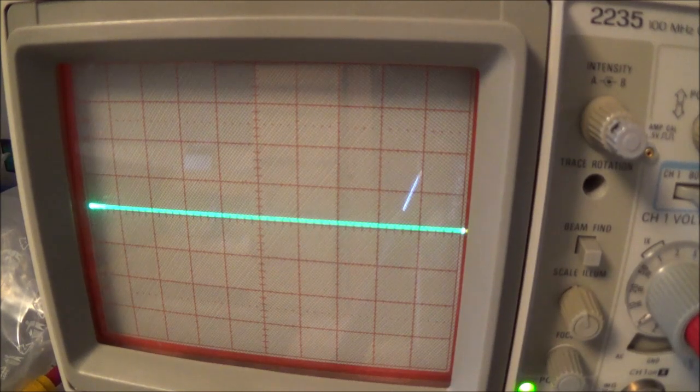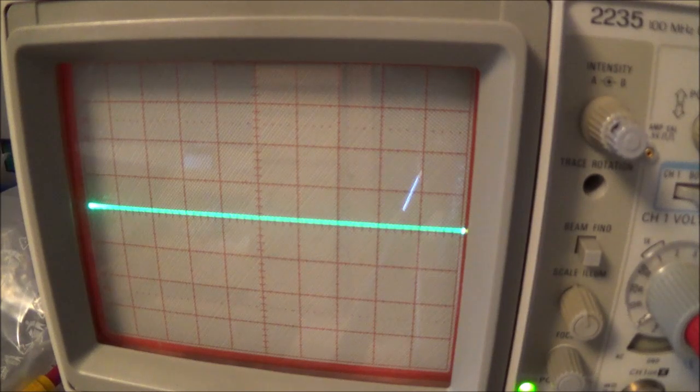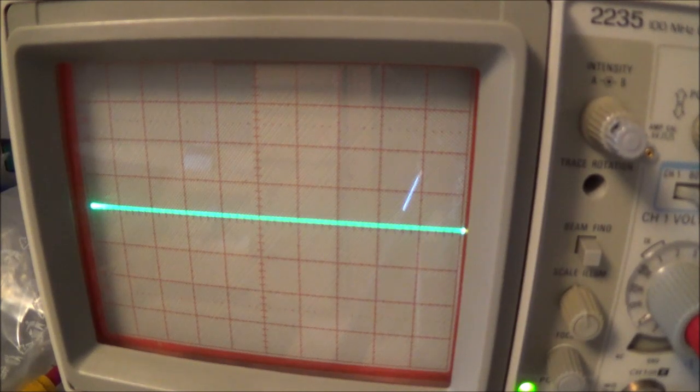I want to see if this 3.3 volt zener diode has the same thing. Of course all zener diodes, basically the important ratings are the zener voltage, the power dissipation. They're rated at different wattages like half watt, one watt and so forth, and the tolerance. I think this might be a plus five to minus five percent tolerance.